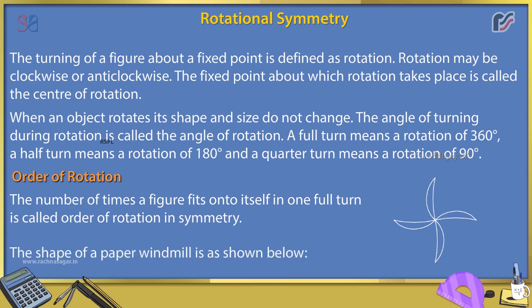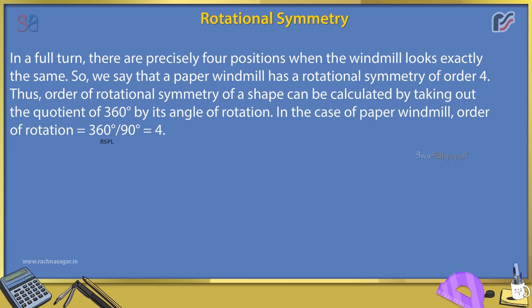The shape of a paper windmill is as shown below. In a full turn, there are precisely four positions when the windmill looks exactly the same.